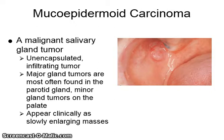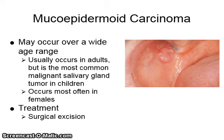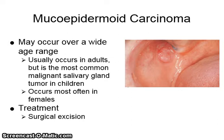Mucoepidermoid carcinoma is a malignant salivary gland tumor — an unencapsulated, infiltrating tumor. Major gland tumors are most often found in the parotid gland, while minor gland tumors are on the palate. It appears clinically as a slowly enlarging mass or masses, may occur over a wide age range but usually in adults, and is the most common malignant salivary gland tumor in children, occurring most often in females. It is treated by surgical excision.